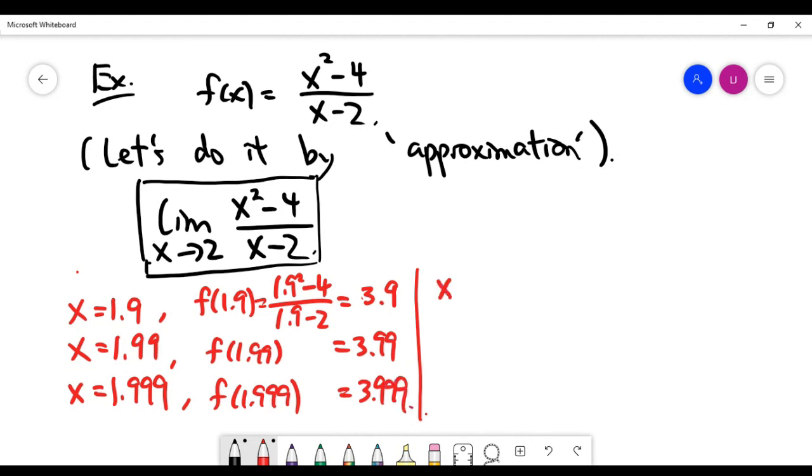Similarly, we have to approach 2 from the other direction and confirm that the value is the same for both parts of approaching 2 from two different directions. So you can choose some values bigger than 2 to start with.